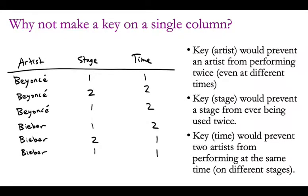It's not enough to use a single column as a key if the things we're interested in are preventing artists from sharing a stage or preventing artists from being in two places at once. If we chose artist as a key, that would prevent an artist from performing twice, even at different times. If we made stage a key, a stage could only be used once — it couldn't be used at two different times. If we made time a key, only one thing could happen at that time — one artist performing even though we have multiple stages. All of those would be too restrictive.